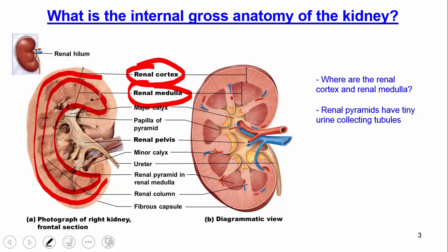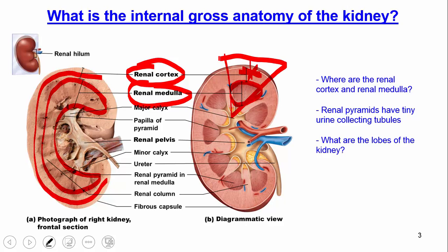Whenever you look at the medulla and break it down further, you see structures called pyramids. A bunch of renal pyramids compose the medulla. Whenever you talk about a pyramid as well as the cortex that is just next to it, that triangular section is something we call a lobe. So when we say lobes of the kidneys, it would be like one of those triangles there.